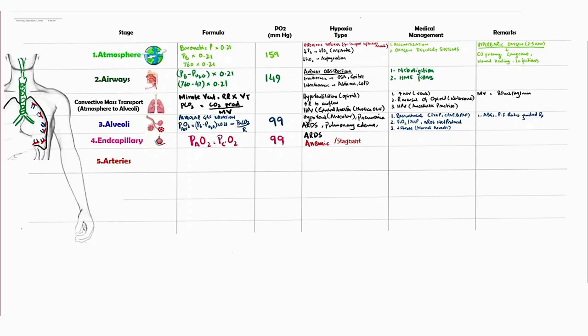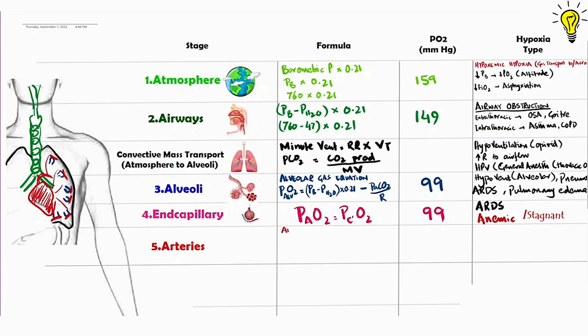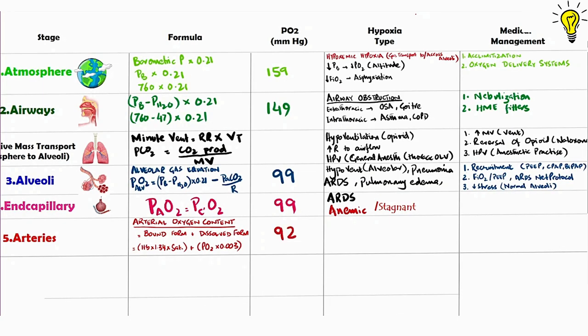The first four stages of oxygen cascade have already been covered in previous episode. Quickly going through stage 5 in the arteries: oxygenated blood from end capillaries forms pulmonary veins that carry it to the left atrium mixed in with a small fraction of shunted blood. The arterial oxygen content is some of hemoglobin bound oxygen and dissolved oxygen. Oxygen pressure in arteries is around 92 millimeters of mercury, slightly less than the pulmonary arteries due to mixture of shunted blood.